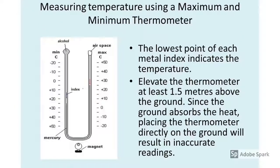Now I'm going to introduce a device called the maximum and minimum thermometer, also known as the Six's thermometer. This is a combination thermometer which, if left in a location for 24 hours, will show you what the maximum temperature recorded and the minimum temperature experienced in that location were within that time range.